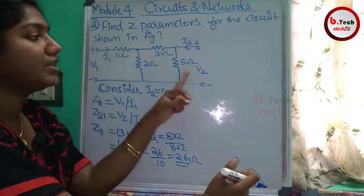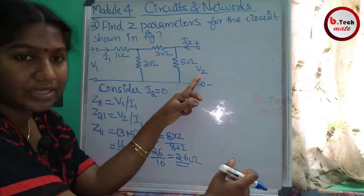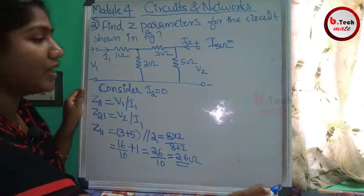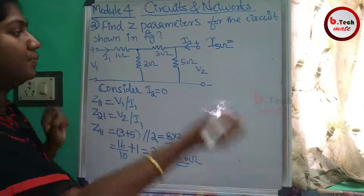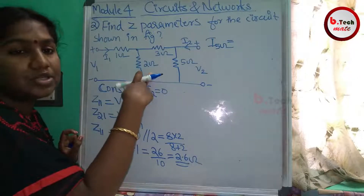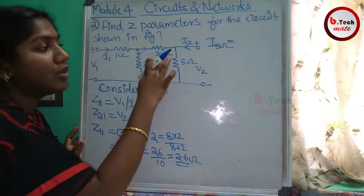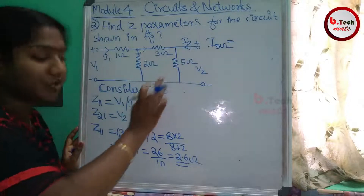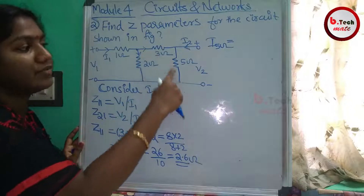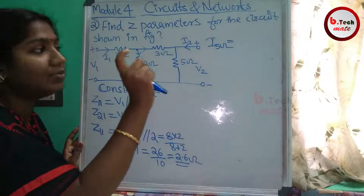The voltage V2 equals the current through the 5 ohm multiplied by 5 ohm. The current I1 entering the junction divides between the 2 ohm branch and the series 3 ohm plus 5 ohm branch. The same current flows through both 3 ohm and 5 ohm since they are in series. That current is I through 5 ohm.